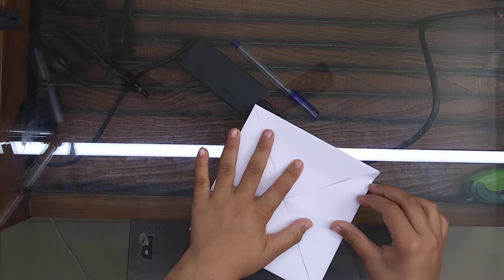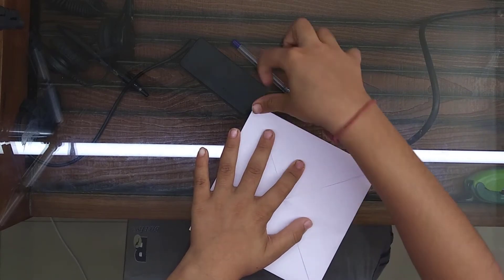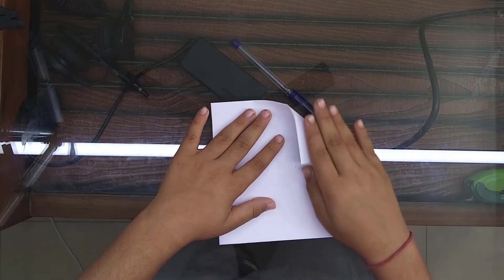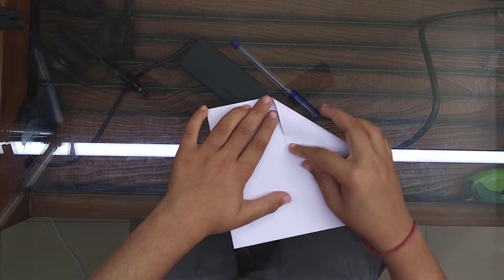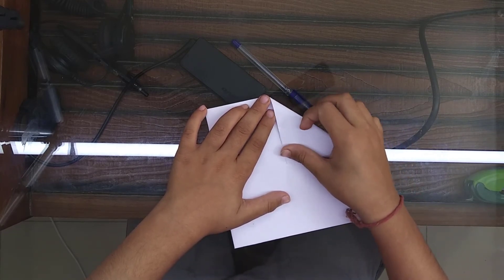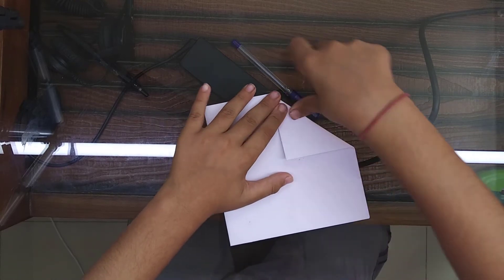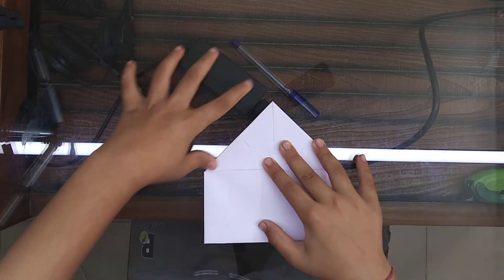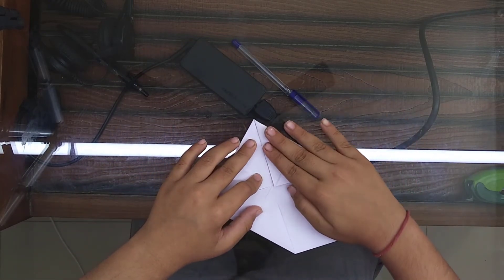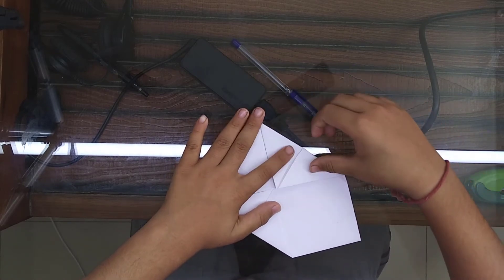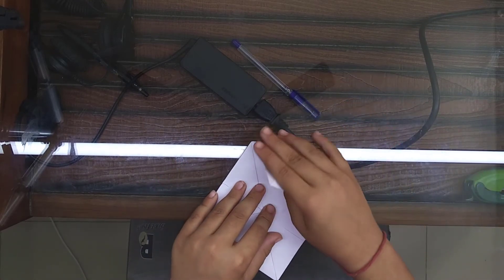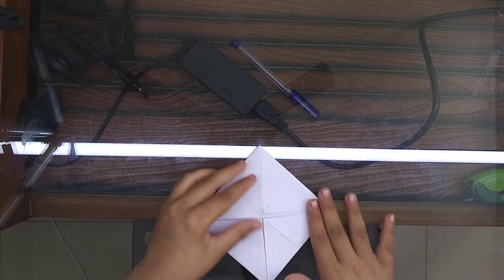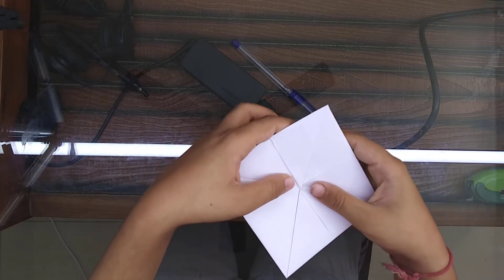It's okay if it's not proper. See, mine is also not that proper. That doesn't matter. Now flip it and then do it the same from this side. If I'm going too fast, then you can pause the video and then make the steps. Just one more. Now I am done. See, now your result is like this.